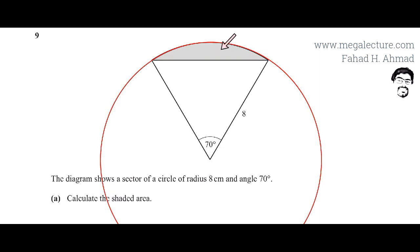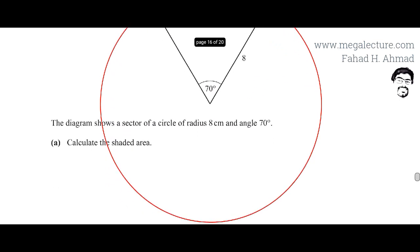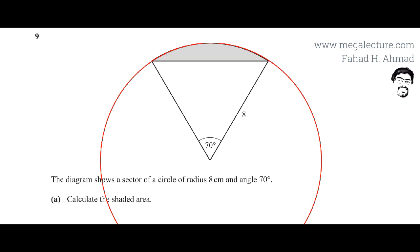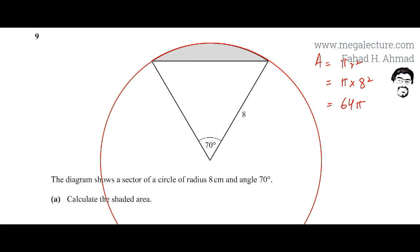Before calculating the shaded area, I've drawn the bigger circle — the one whose sector has been taken out. I'm going to find the area of this bigger circle. The formula is area equals pi r squared. The radius is 8 centimeters, so it's going to be 8 squared, giving us 64 pi. That is the area of this bigger circle.